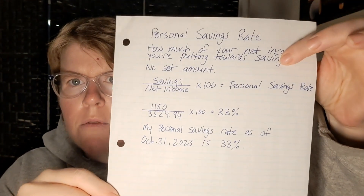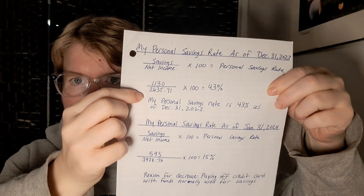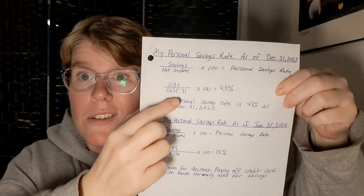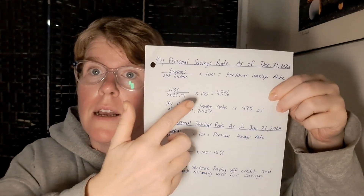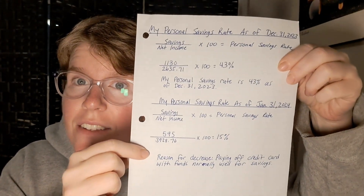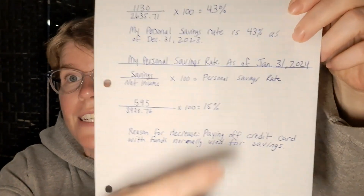I calculate my personal savings rate monthly, and it has changed over the last four or five months — I'm fairly new to this too. I'll show you mine to date and explain why it has changed. In October 2023, the first month I started doing this, my personal savings rate was 33%. Then in December it was 43%, because I kept my savings amount the same but my net income decreased, so I was putting proportionally more towards savings.